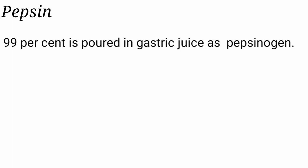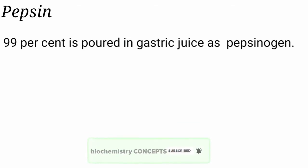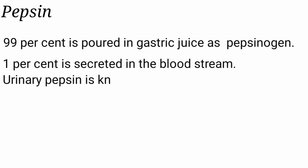Coming to the action of pepsin — it is secreted as the inactive form pepsinogen. It is synthesized in the chief cells, and 99% is poured into the gastric juice as pepsinogen. So 1% is secreted into the bloodstream, from where it is excreted in the urine. This urinary pepsin is known as uropepsin.